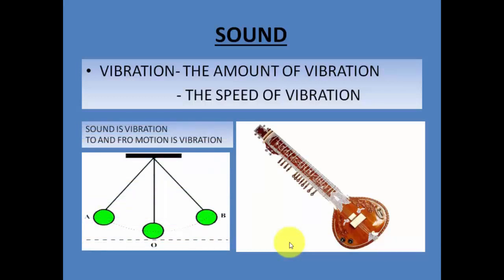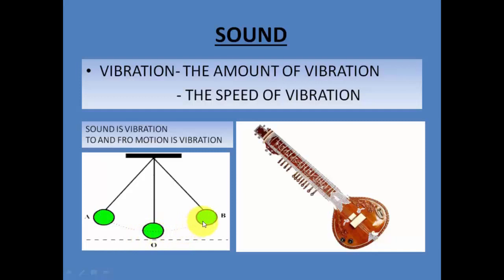When I say to-and-fro, consider a ball connected to a thread which is tied to a fixed point, hanging down. If I take the ball to one side and release it, the ball automatically goes from one side to the center position, and then from the center to the other side — left side. So it goes to and fro. This movement is called to-and-fro motion. When something is vibrating, it is going to and fro repeatedly like this.